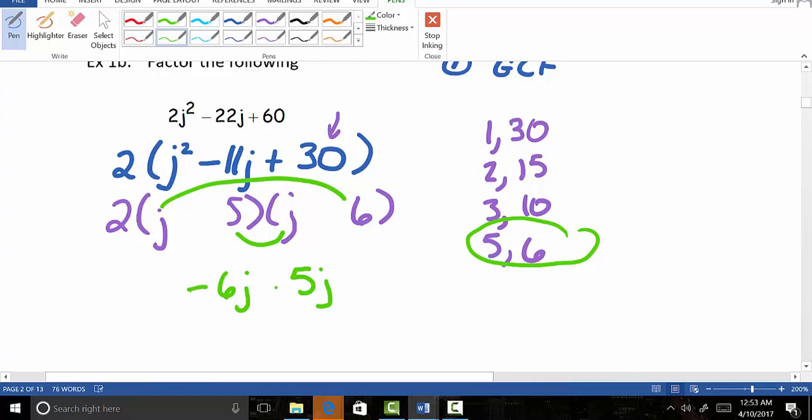And as a result, they have to end up both being negative. Because if you have negative 6j and you take away 5 more j's, then you end up with that grand total of negative 11j's. And as a result of that, both of these then would have to be negative for that to happen.